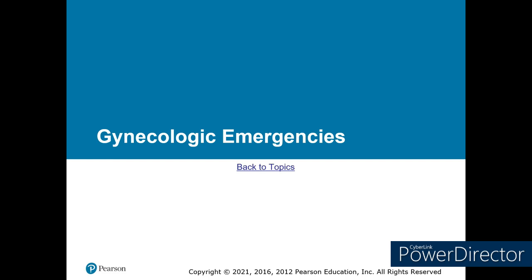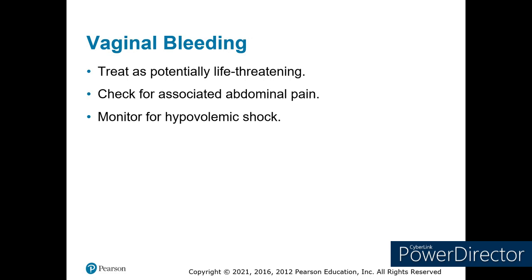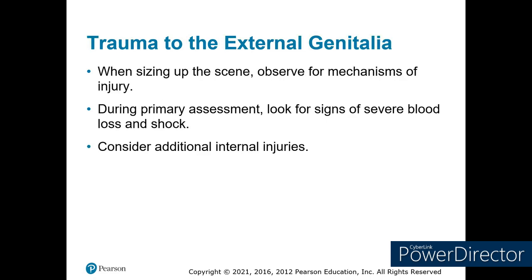Other gynecological problems not related to pregnancy: most will involve some type of vaginal bleeding, abdominal pain, painful or excessive menstruation — treat for potential blood loss and shock. Trauma to the external genitalia — identify the mechanism: could be a fall, assault, or impact to the groin. If there's enough to cause external damage, suspect internal injury and look for signs of hypovolemia.